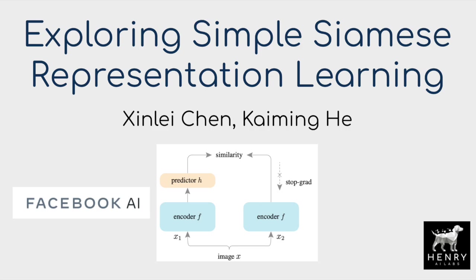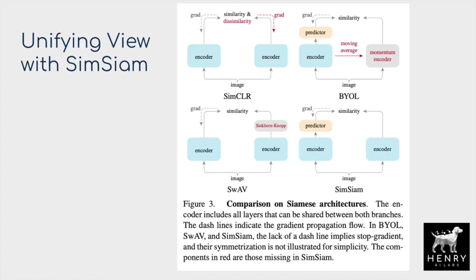Self-supervised learning is one of the most interesting developments in deep learning. The future of learning features from high-dimensional data like images, videos, or text will not require human labeling. This unlocks the use of datasets like all of the images on the internet, all the videos on YouTube, or all the scientific papers that have ever been written. Of the self-supervised learning algorithms, contrastive learning has really taken off with papers like SimCLR, MoCo, or Bootstrap Your Own Latent.